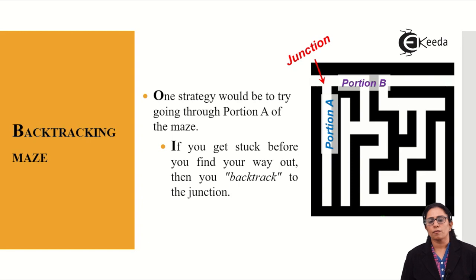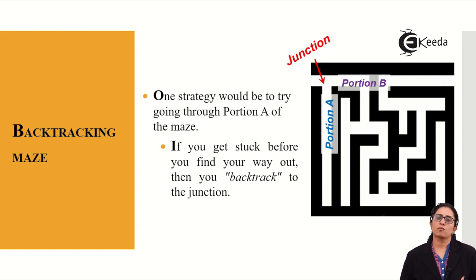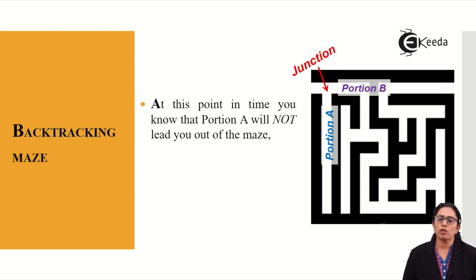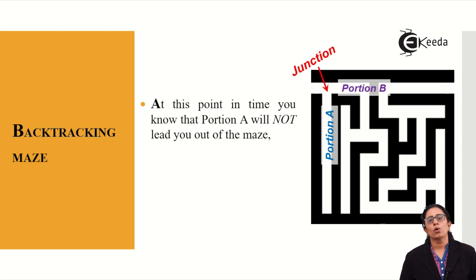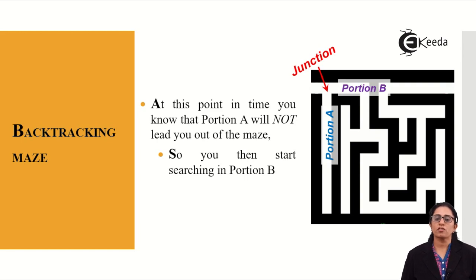If we get stuck before finding our way, we then backtrack to this particular junction — the point where we separated into two options, portion A and portion B. At this point, knowing that portion A will not lead you out of the maze, you come back to this junction and start searching in portion B, where we will find a solution that leads us out.